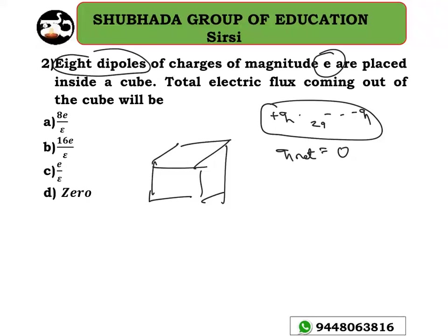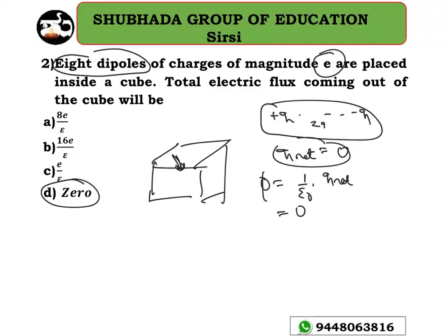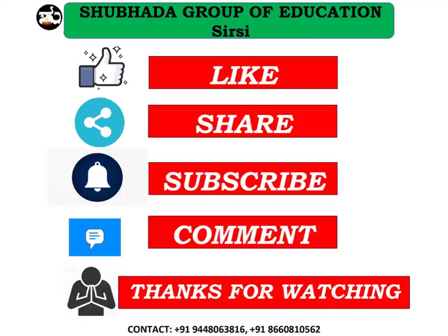The net charge on a dipole system is zero. Therefore, the net charge inside the cube is zero, and by Gauss's law — flux φ = (1/ε₀) × Q_enclosed — the flux is zero. So option D is the right answer for this question.